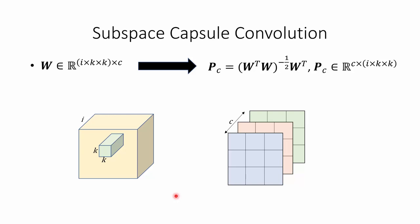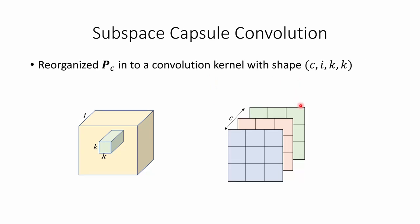We also extended the idea to incorporate weight sharing as in convolution for subspace capsules. If we want to create a kernel with a k-by-k receptive field and a capsule subspace of c-dimensional space, we need a weight matrix belonging to this space. We can create the PC transformation based on this formulation. Then we reorganize the PC matrix into a convolution kernel with shape c by i by k by k. By convolving this kernel on the input feature vectors, the corresponding capsules are placed along the output feature maps.